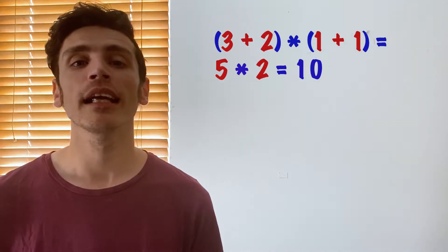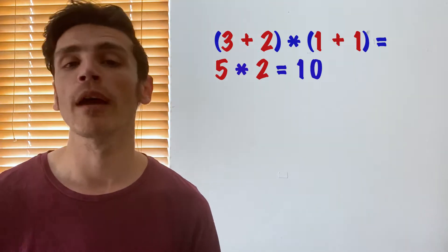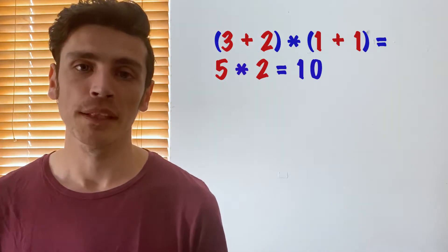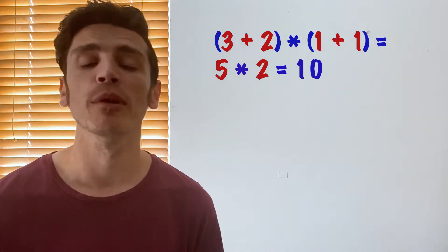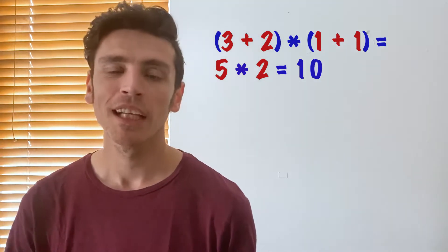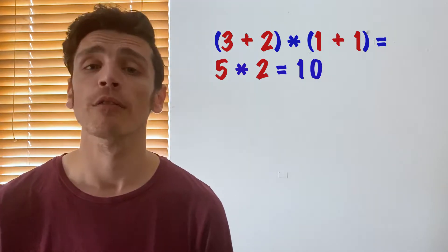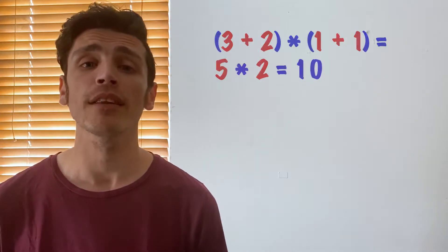So this is one way we can solve it, and it's great when we have simple numbers — but when we have a variable in there it gets a little bit tricky. So let's use distributive law to solve the exact same problem, and if we do it right we should get the exact same answer as we just did.